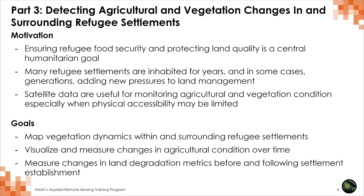Satellite data are especially useful for monitoring agriculture and vegetation, and particularly helpful when we lack physical access to a site. As we know from Part 2, refugee settlements tend to be located in border regions — areas that are more difficult to access than a large-scale urban settlement.